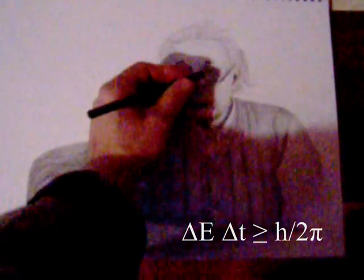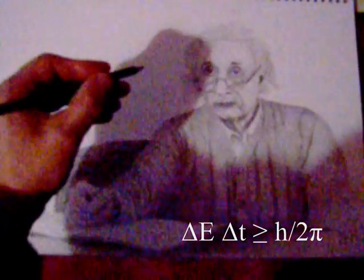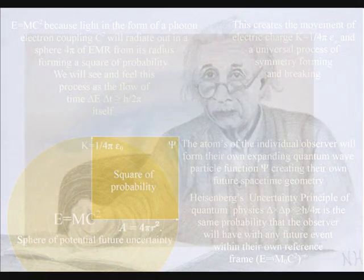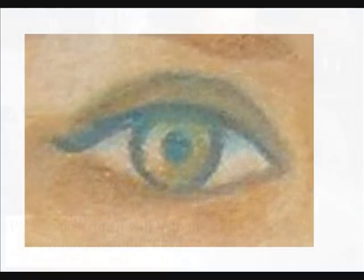An artist will take energy and time to create a work of art because the atoms of the hand and eye have bonded together, forming the movement of electric charge, creating their own potential future. Creation is truly in the hand and eye of the beholder in this theory.